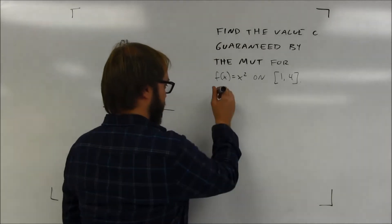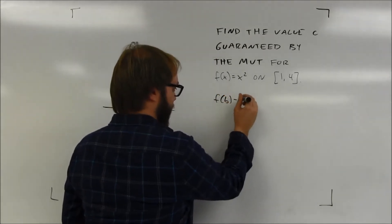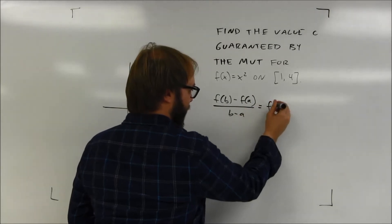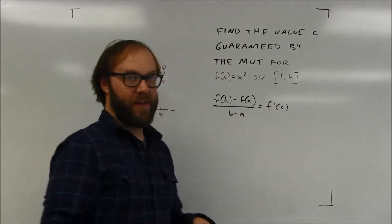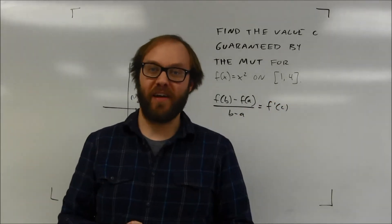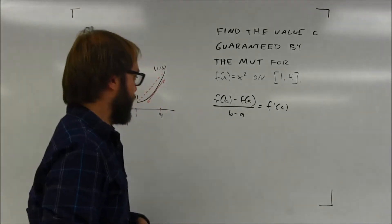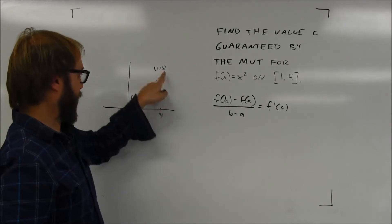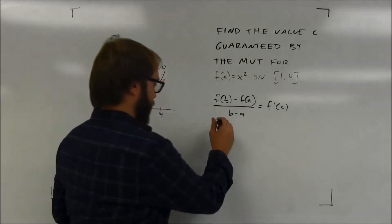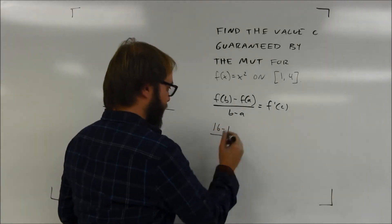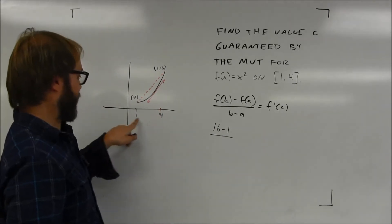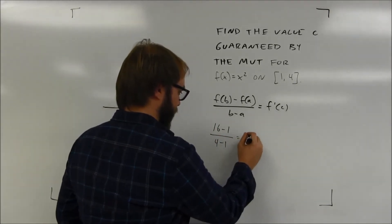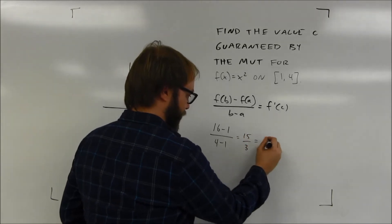So really what I'm doing here is setting f(b) minus f(a) all over b minus a equal to the derivative, and figuring out for what value of x those two things are equal. This is just finding the slope between the two points. So f(b) minus f(a) is 16 minus 1, and b minus a is 4 minus 1. The slope is 15 over 3, which equals 5.